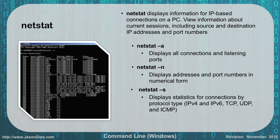netstat -n displays addresses and port numbers in numerical form — so instead of seeing Yahoo.com you would see Yahoo's IP address. This is generally more useful for network troubleshooting. netstat -s displays statistics for connections, including how many connections you've had and how long they've been up. Running netstat -an combines both flags, giving you all connections and listening ports in numerical IP address form.